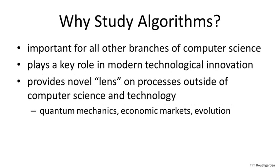Third, although this is getting significantly outside the scope of this course, algorithms are increasingly being used to provide a novel lens on processes outside of computer science and technology. For example, the study of quantum computation has provided a new computational viewpoint on quantum mechanics. Price fluctuations in economic markets can be fruitfully viewed as an algorithmic process, and even evolution can be usefully thought of as a surprisingly effective search algorithm.